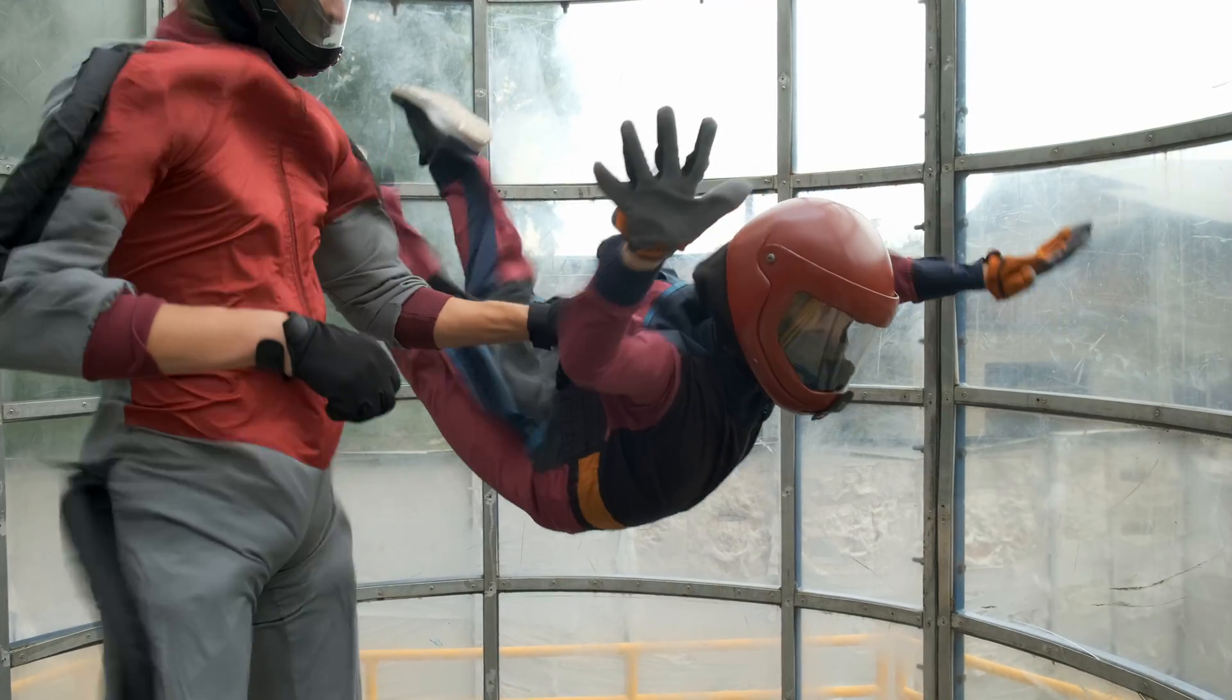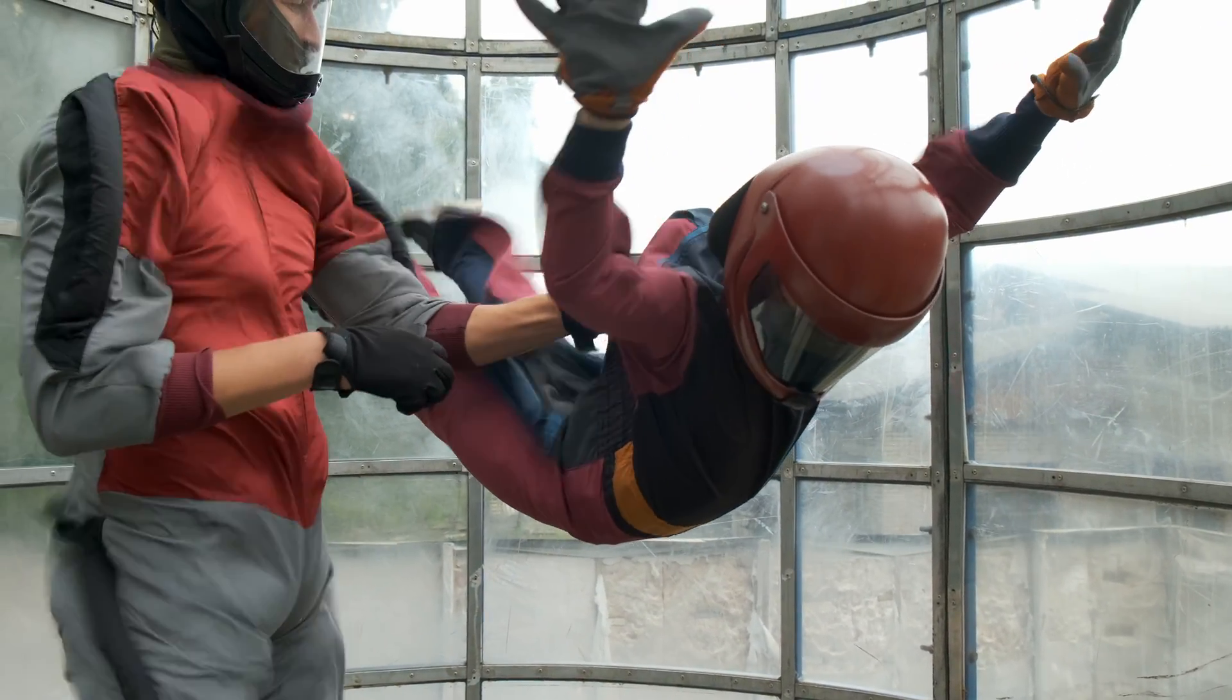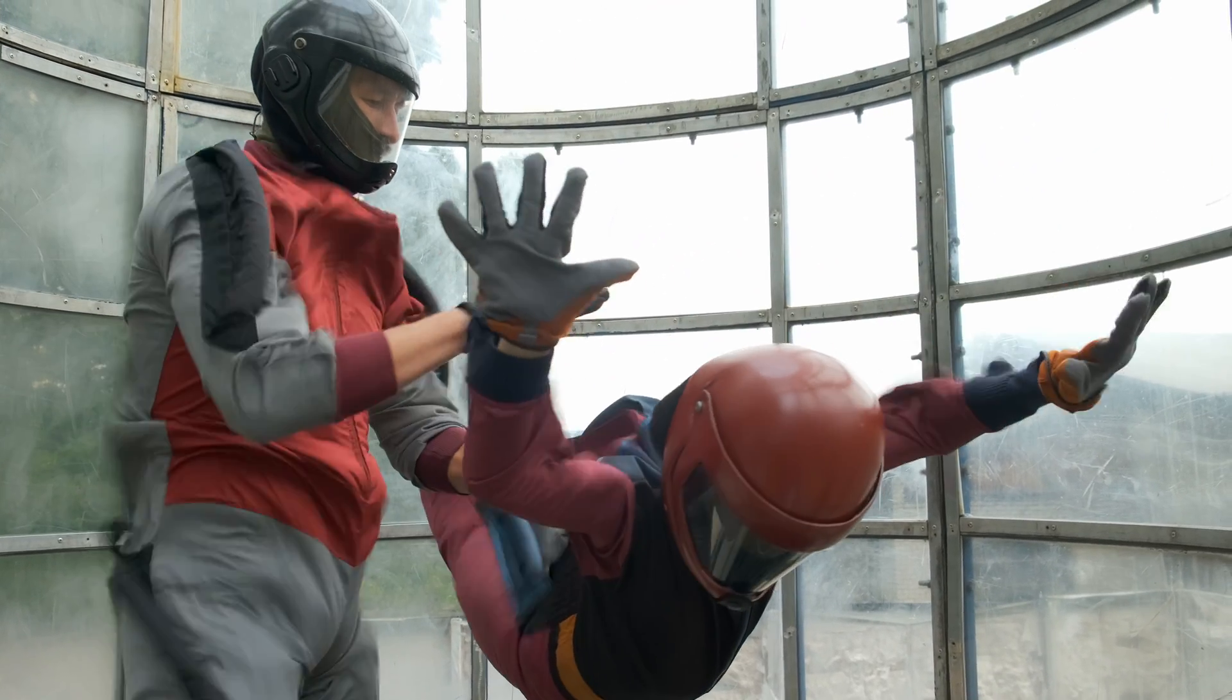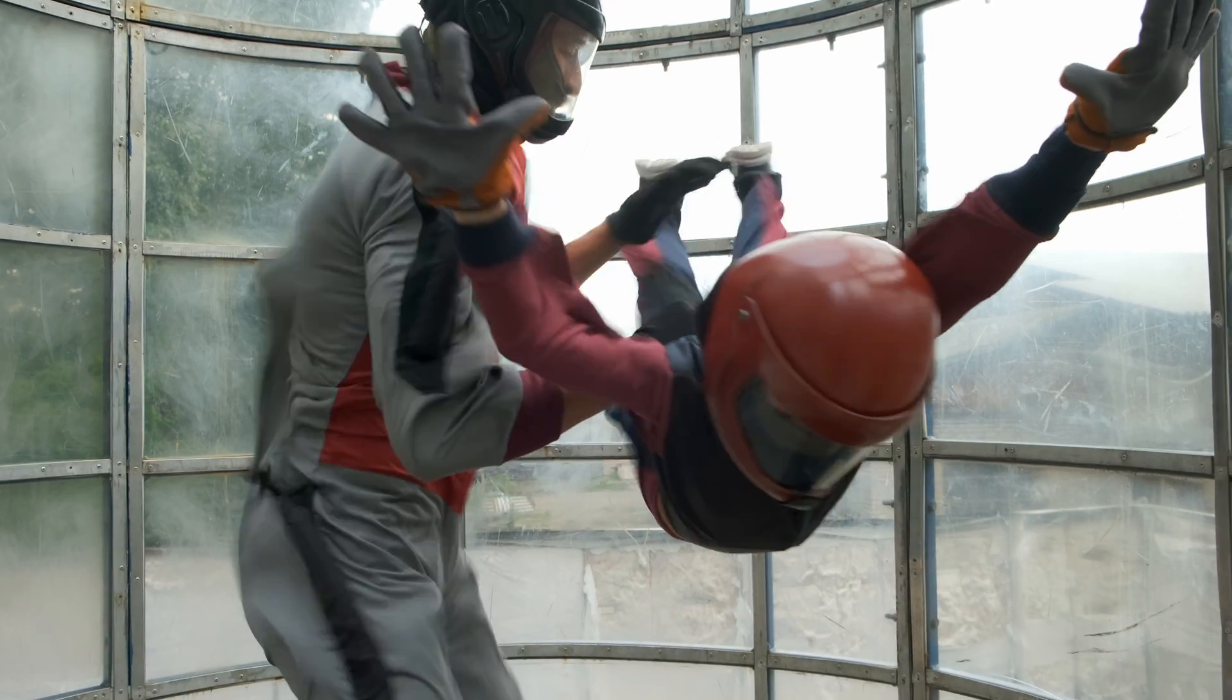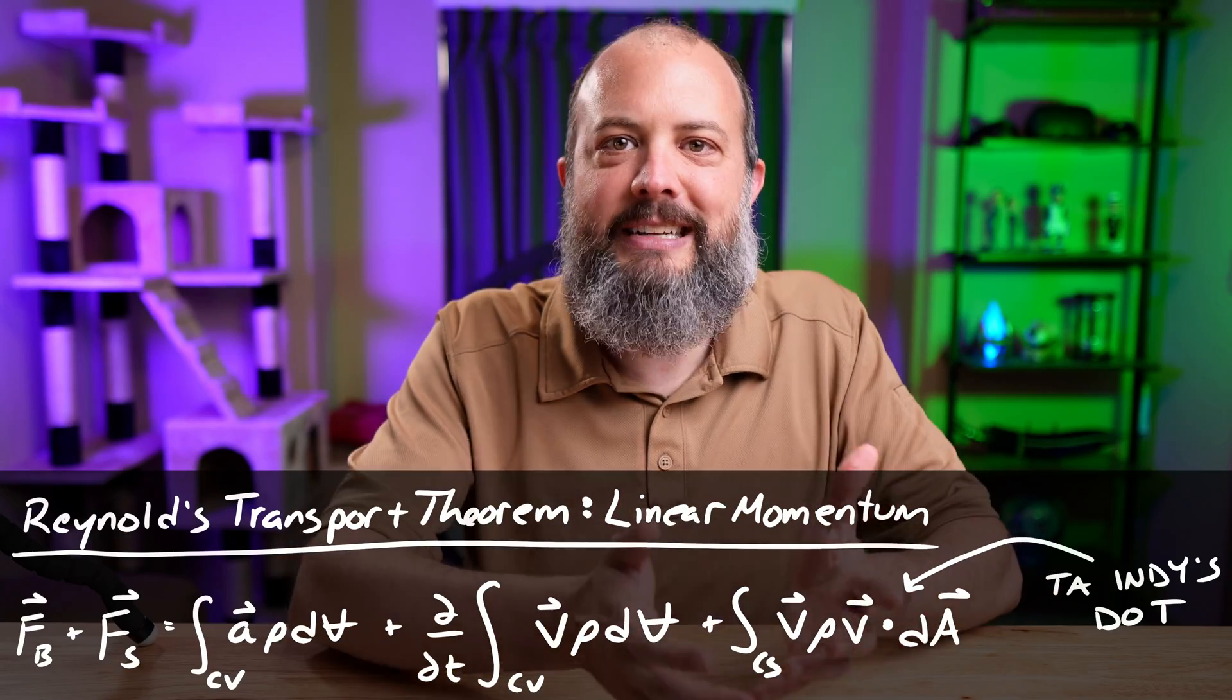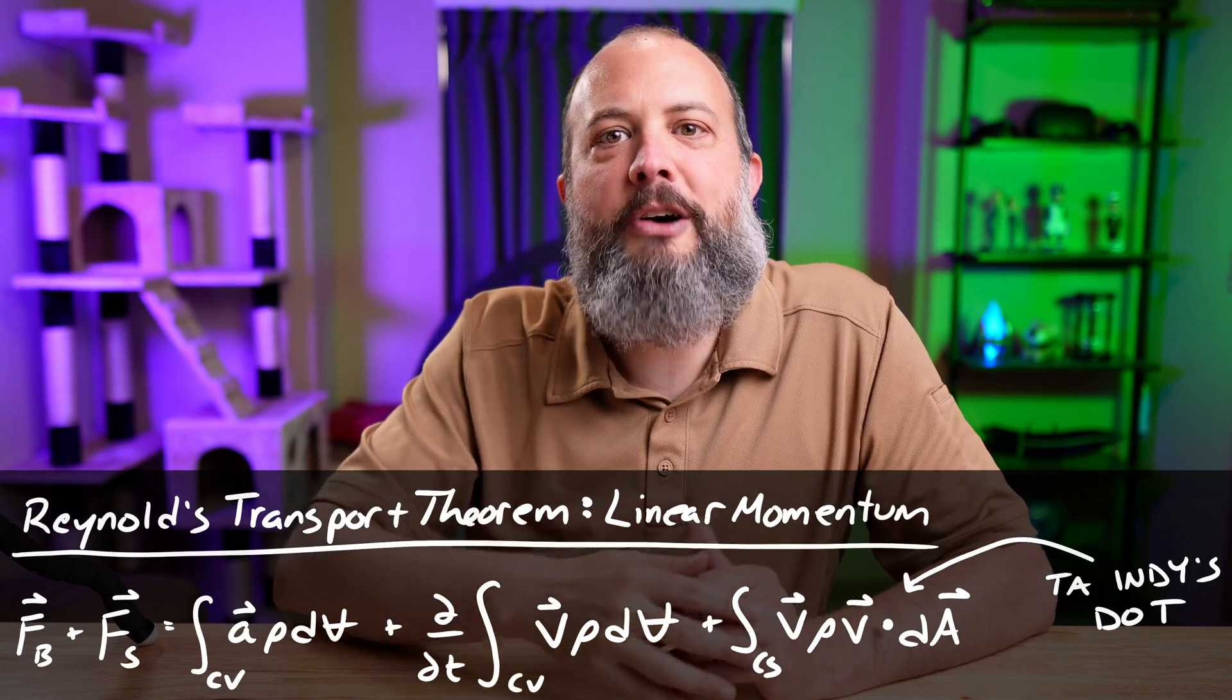So an example with both would be a skydiver. They're being pulled down by gravity, which is a body force acting at a distance. And then they're being pushed up by the air by drag, which is a surface force due to actual contact with the air. If you want to see an example momentum problem that has gauge pressure acting as a force, then watch the video I have linked up here for fluid flow around a pipe elbow.